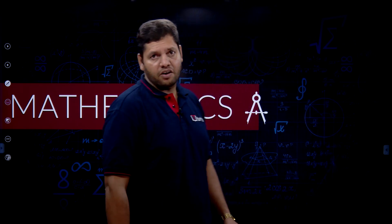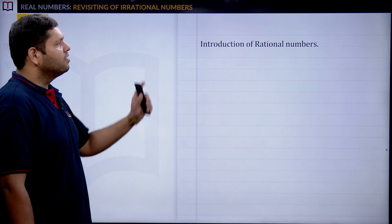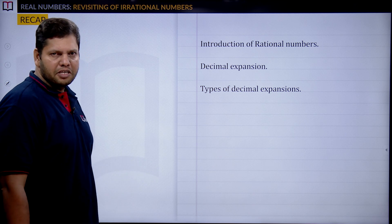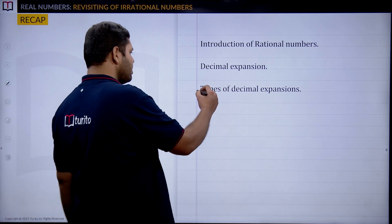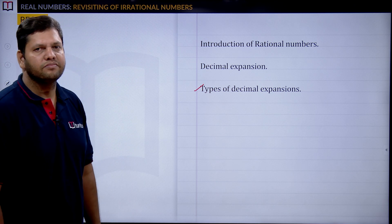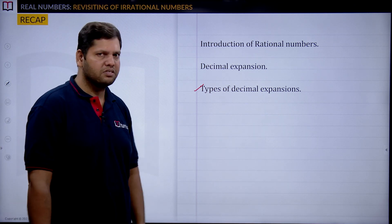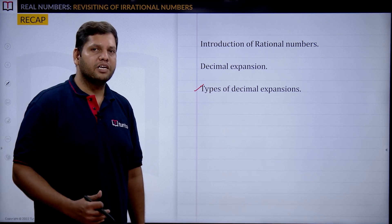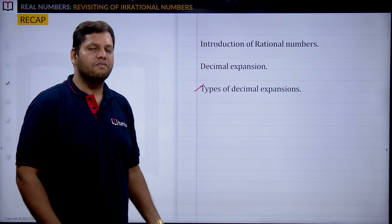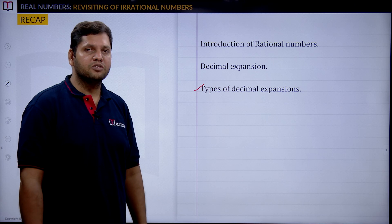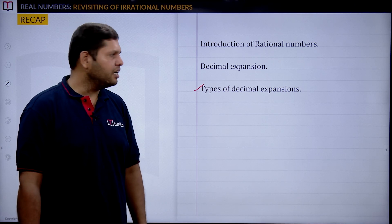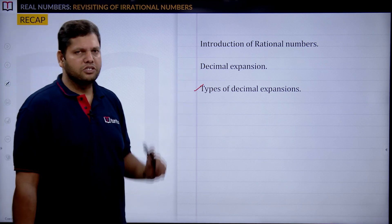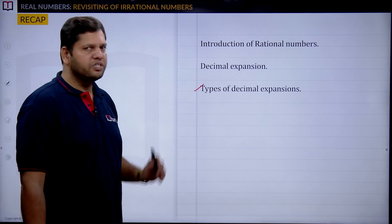In the previous classes, we discussed the introduction of rational numbers, decimal expansion, and the types of decimal expansion. Children, can you tell me what are the types of decimal expansions? Any idea? In the previous class, I told you about these types. How many types do we have, and which decimal expansion can we consider a rational number?